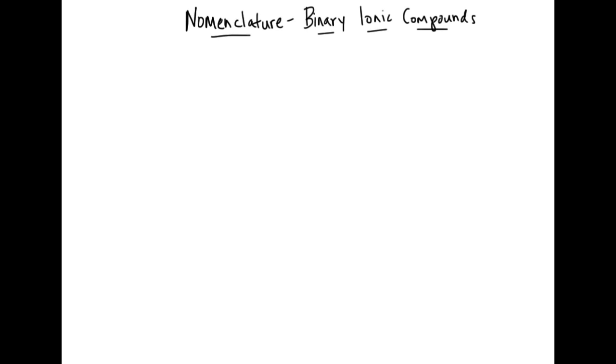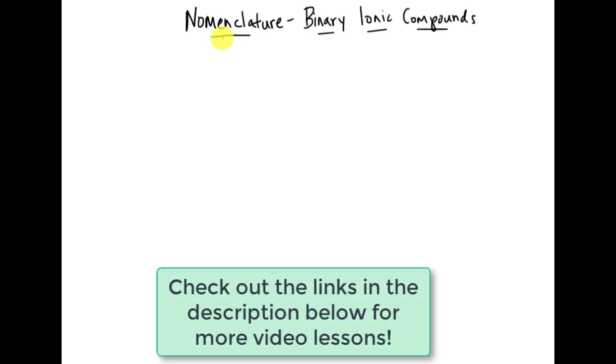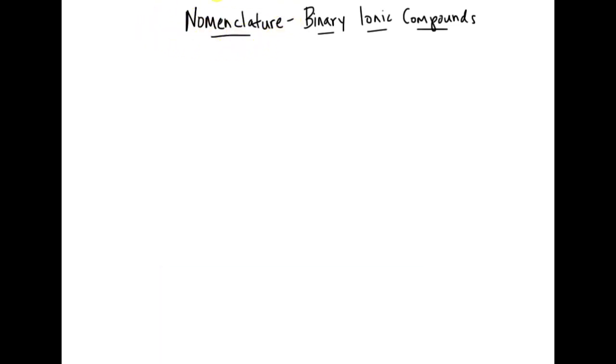Hello, today's lesson is on naming compounds and formula writing. In this lesson we're going to talk about nomenclature, and nomenclature is the word that we use for naming compounds. So it's a systematic way of naming things. You might have heard this in biology, but we use it in chemistry to systematically name compounds.